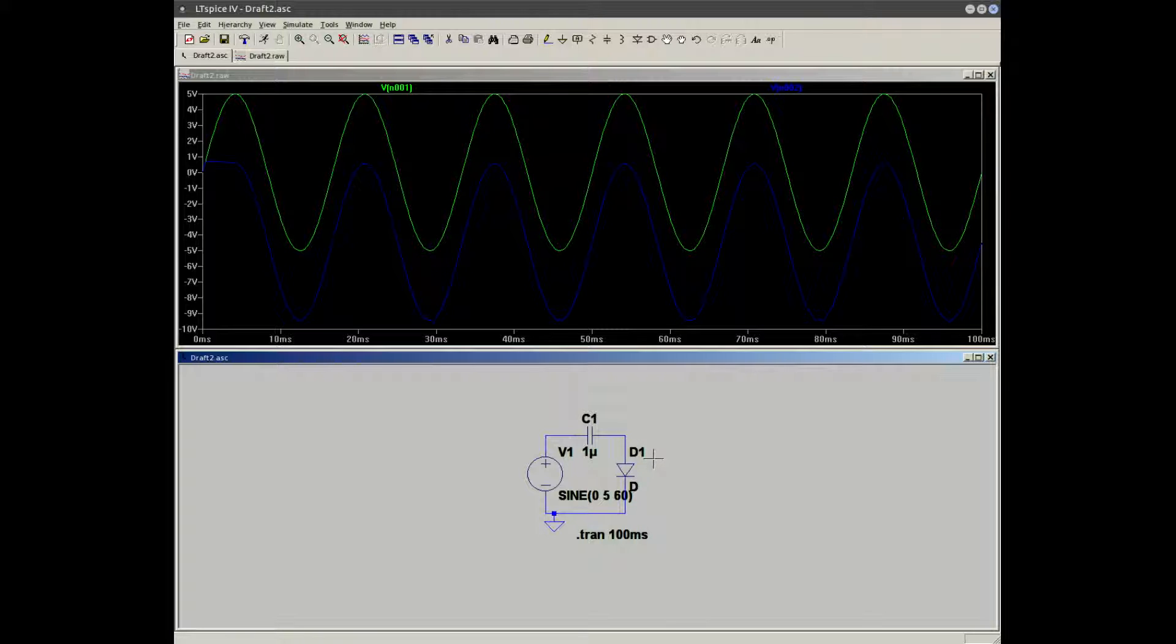Just like Kirchhoff's law states, total voltage in a closed circuit is equal to the sum of voltage drops in that closed circuit. What we have is 0.7 volt drop across the diode. So we must have 4.3 volt drop across the capacitor to equal the input voltage.